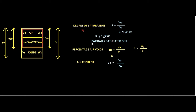When the degree of saturation of any soil is between zero and one hundred, that soil is called partially saturated soil. Now let's move on to the next term: percentage air voids. This is the ratio of volume of air to the total volume — remember, total volume, not volume of voids.